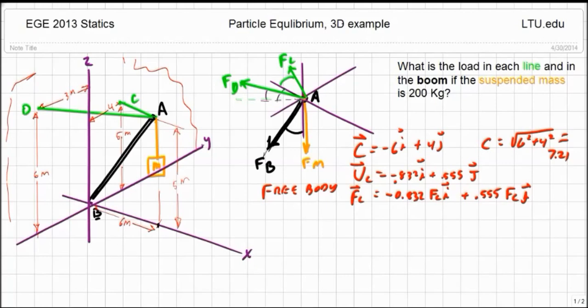Similarly, in the D direction, the position vector is equal to minus six I minus three J plus one K. My magnitude is 6.78.